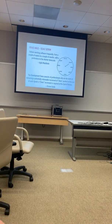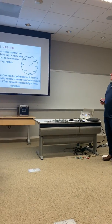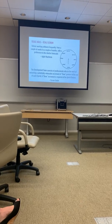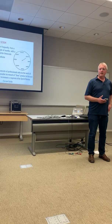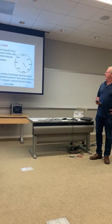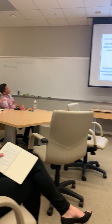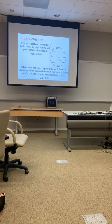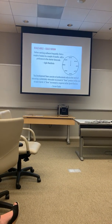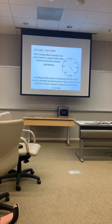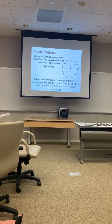Here are two things: one from the manifesto, one from the scrum guide. From the manifesto: 'Deliver working software frequently, from a couple of weeks to a couple of months, with a preference for the shorter timescale.' From the scrum guide: 'The development team consists of professionals who do the work of delivering a potentially releasable increment of done product at the end of each sprint.'